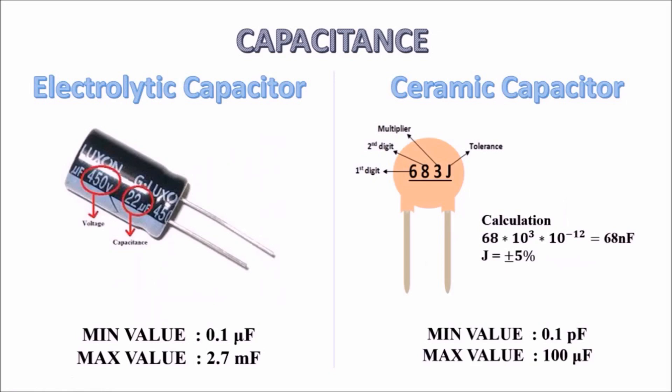Other ceramic capacitors, like Class II capacitors (X7R, X5R), have moderate to good temperature stability but offer higher capacitance values compared to Class I capacitors.